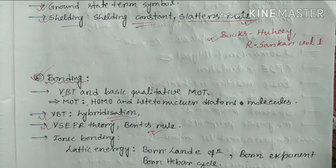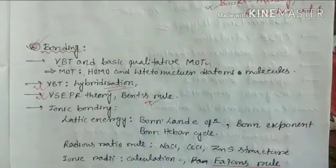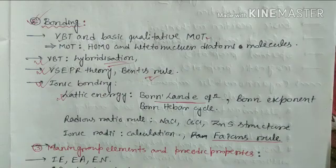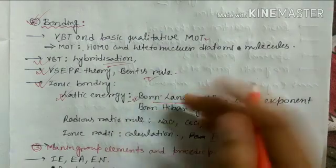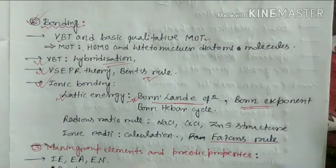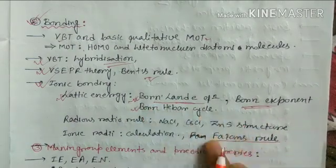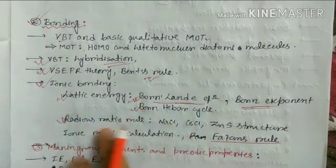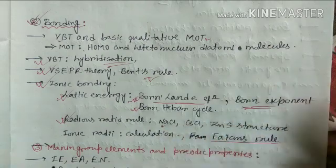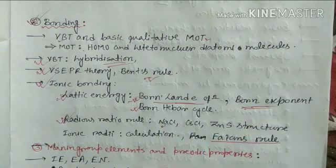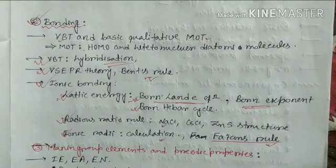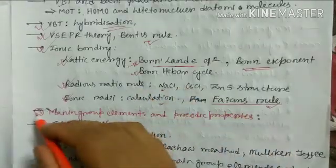VSEPR theory is very important, and Bent's rule, because these are used for determining the shape of molecules. For ionic bonding, you have to do lattice energy, the concept of lattice packing, the Born-Landé equation, and related equations like the Kapustinskii equation. The Born-Landé equation is most important — they can directly ask you to determine lattice energy. Know the Born exponent and which properties it depends on. Then the Born-Haber cycle, the radius ratio rule, Pauling's rule for ionic radii, and Fajans' rule — the introduction of covalency in ionic bonding.